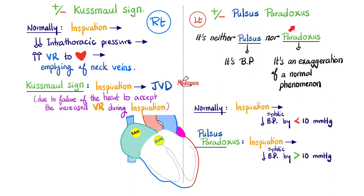Pulsus paradoxus is also not a paradox — it's actually an exaggeration of the normal phenomenon. Kussmaul sign is when I breathe in and get jugular venous distension, which is not normal. Because normally when I breathe in, my neck veins should empty, not fill with blood. This is the Kussmaul sign.